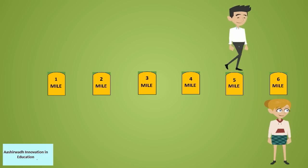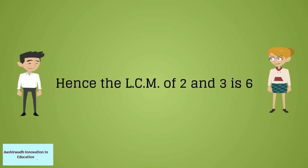Now boy started walking for 2 miles. They both reached 6th mile. The boy and the girl are at the common point of 6th mile. Hence the LCM of 2 and 3 is 6.